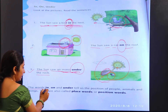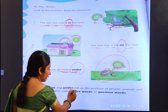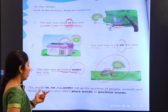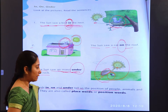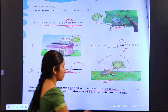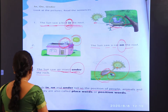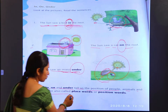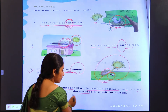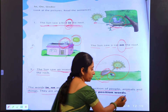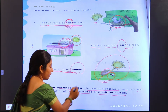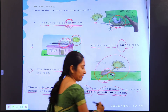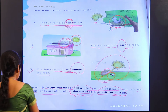The words in, on, and under tell us the position of people, animals, and things. Hum ye kya bataate hain — kisi vyakti ki position, ya kisi animal aur things ki position bataate hain. They are also called place words or position words — unka place denote karte hain, ya unki position show karte hain. Okay, now move on to the next slide.